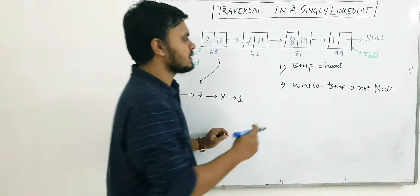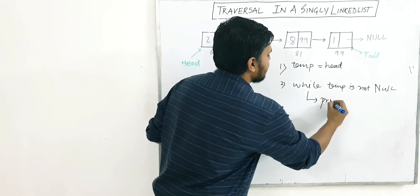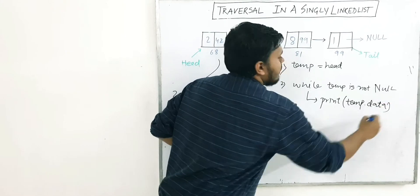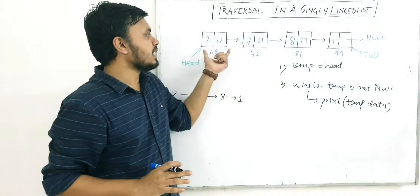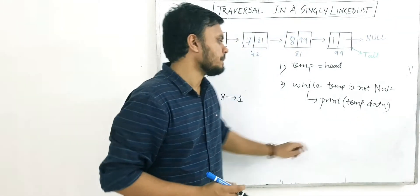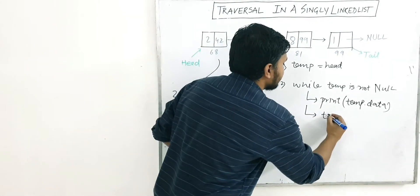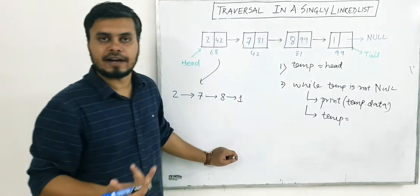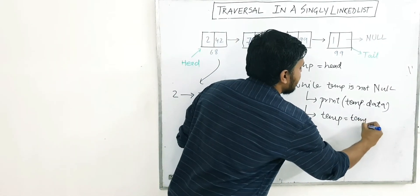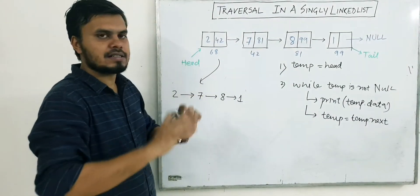Inside this loop we do two things. First, we print whatever is inside temp.data — because temp is a node consisting of two parts: the data part and the address part. Second, we increment temp — not by one or two — but by writing temp = temp.next.